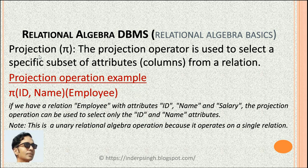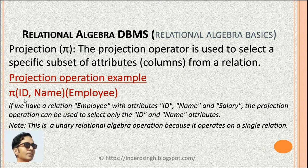The next operation is projection (π). The projection operator is used to select a specific subset of attributes, meaning columns, from a relation. So if the relation has 10 attributes we can select maybe 2 or 3 using projection. For example, given an employee relation with attributes id, name and salary, if we project only id and name, we will get data in just those two attributes. Projection is also a unary relational algebra operation.